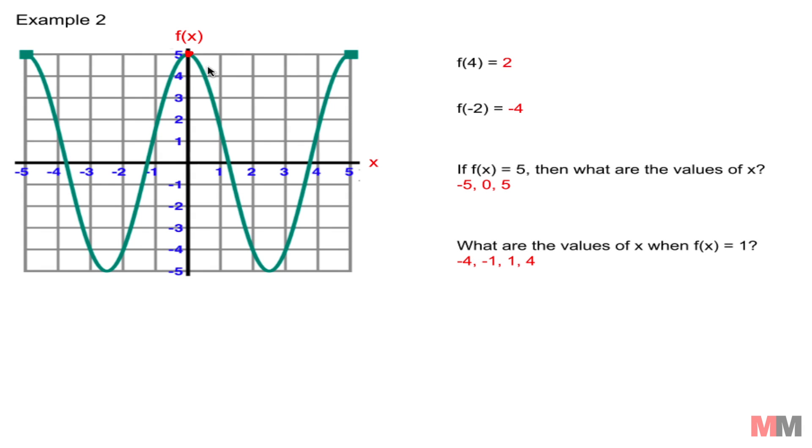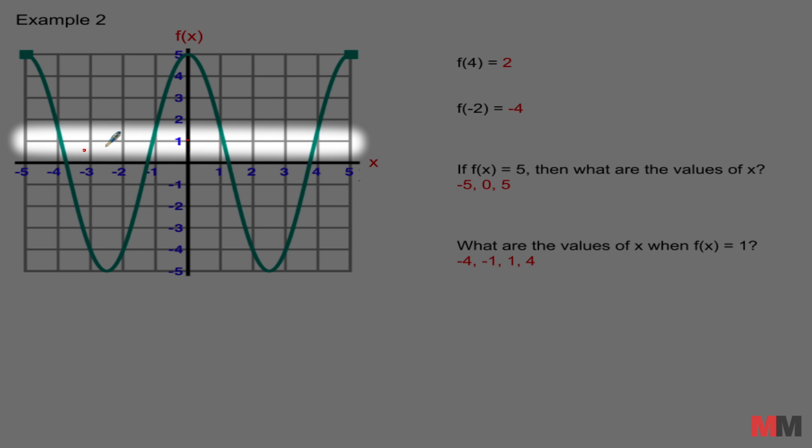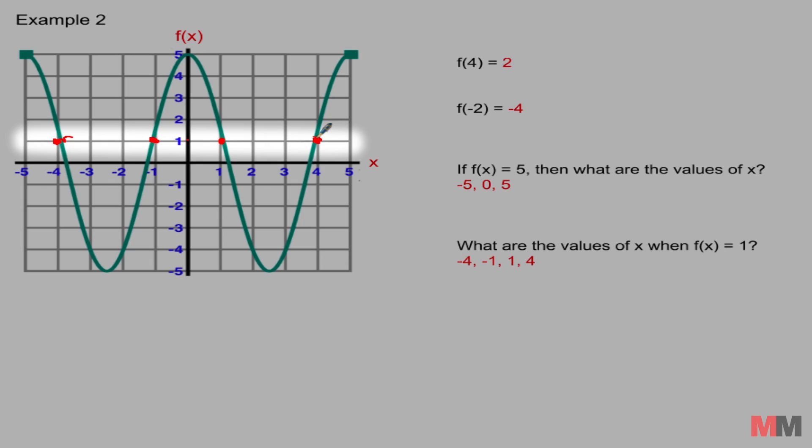That one had three answers. The one below has four answers. What are the values of x when f of x equals 1? So just go through the y axis and then scan left and right. So there's a point right there, right there, and right here, and one more. That one had four answers. And then just name the x values. Negative 4, negative 1, 1, and 4.